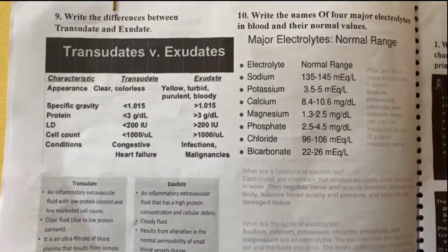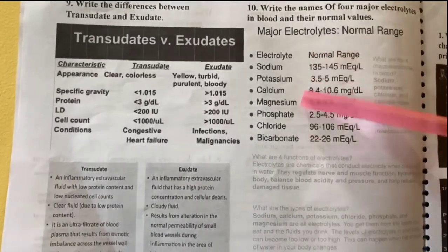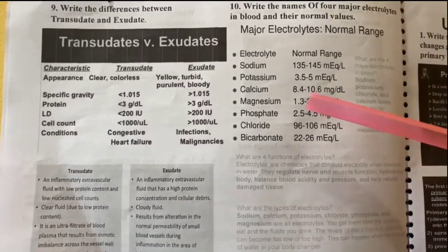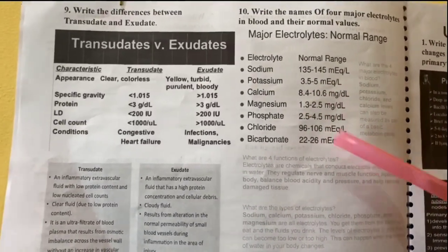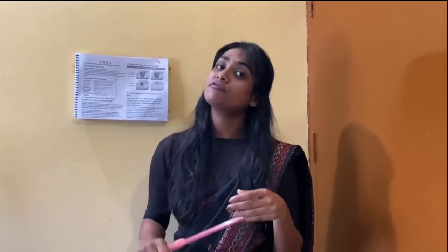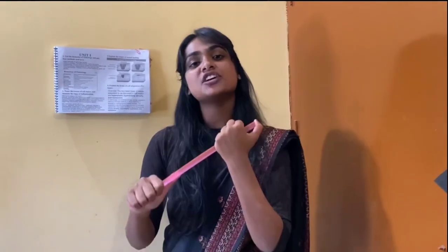These are the major electrolytes — remember their normal ranges if you can. That was all about Unit 1 of pathology. I think it's quite easy. If you have any doubts, put them in the comment section and I will surely respond. Stay tuned for upcoming videos where we will discuss the whole pathology short answers. If you have not subscribed to our channel, please subscribe and share it with your friends. Thank you.